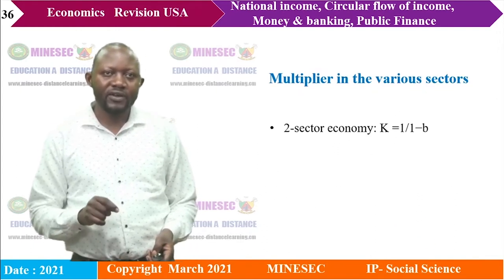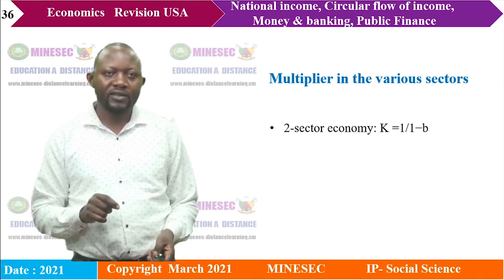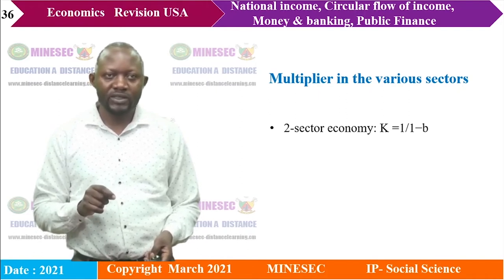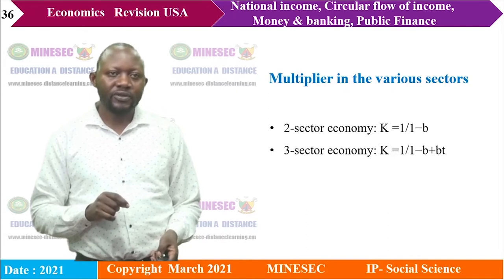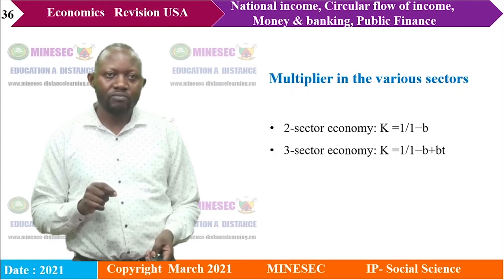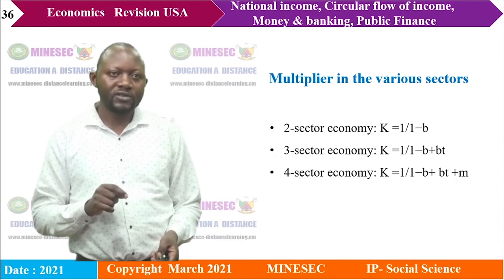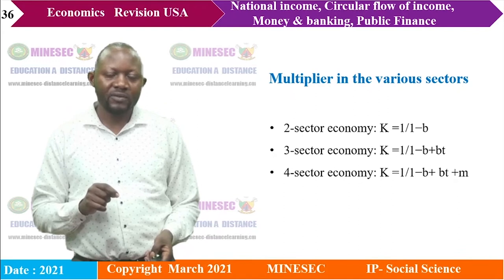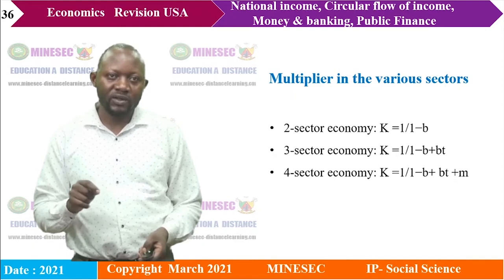In the two-sector frugal economy, the multiplier k = 1/(1 - b), where b is MPC. In the three-sector economy, the multiplier = 1/(1 - b + bt), where t represents the marginal propensity to tax. In the four-sector (open) economy, the multiplier = 1/(1 - b + bt + m), where m is the marginal propensity to import.